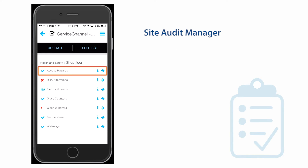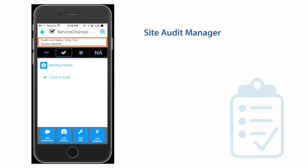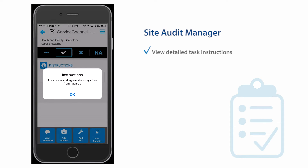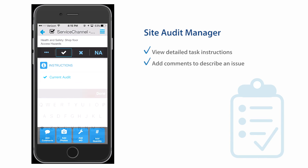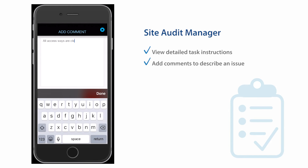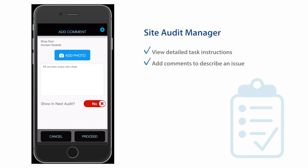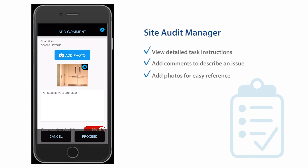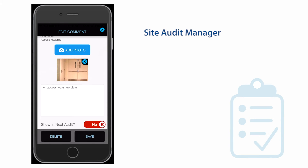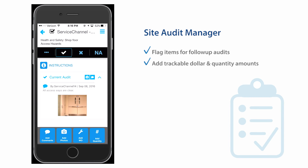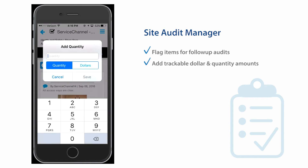Every audit item can be drilled into, displaying a page where you can view detailed instructions, add comments to describe an issue, and, since a picture is worth a thousand words, add photos for easy reference. Selecting the item to show in the next audit flags it, ensuring a close look during the following audit. Dollar amounts or quantity notes may also be added to the item, which are trackable for later review.